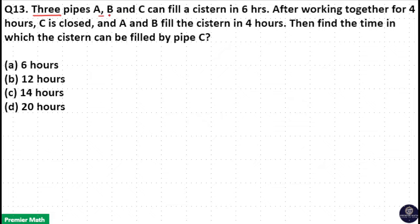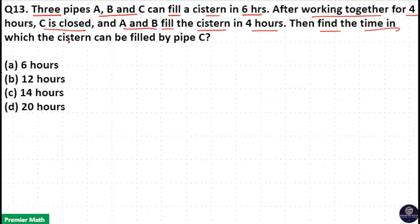Three pipes A, B and C can fill a cistern in 6 hours. After working together for 4 hours, C is closed and A and B fill the cistern in 4 hours. Find the time in which the cistern can be filled by pipe C alone.